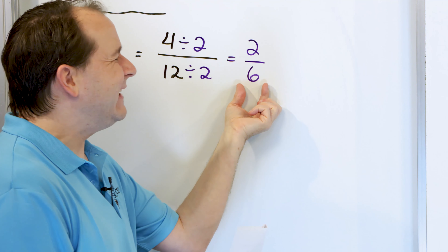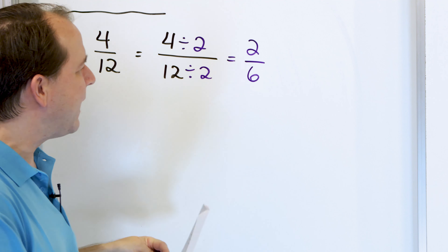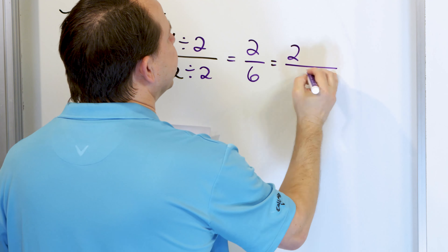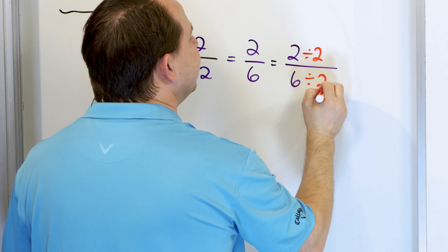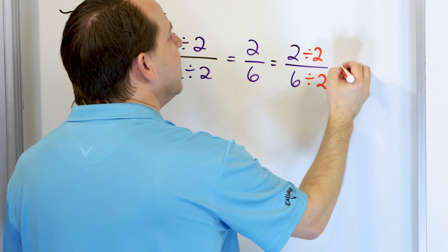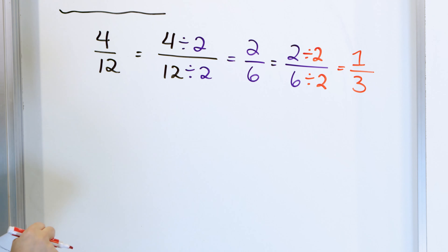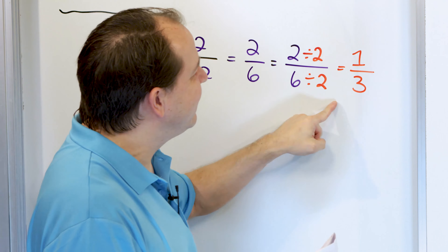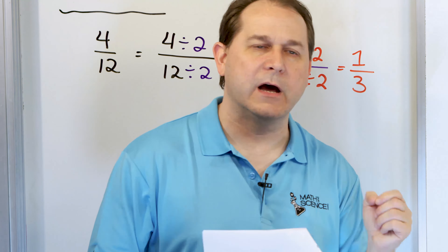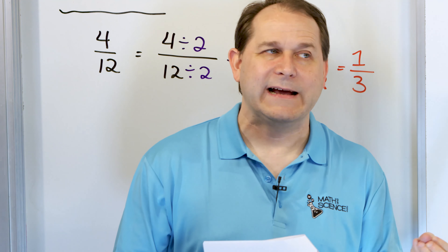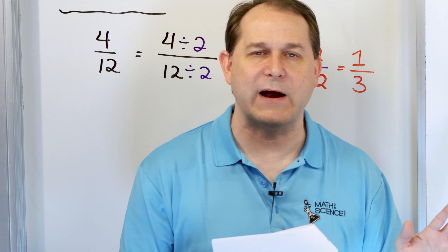But then I look at this and say, wait — is this in simplest form? No, it's not, because I could still divide the top again by two and the bottom again by two. Two divided by two is one on the top, and six divided by two is three on the bottom. So I get an answer of one-third. I cannot simplify this further because I cannot divide top and bottom by something to make it simpler. So I stop at the fraction one-third.